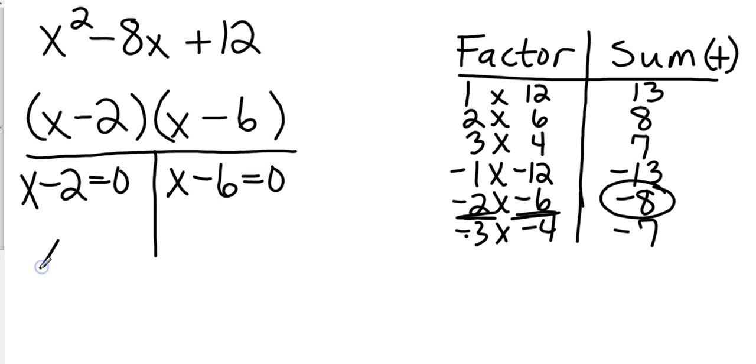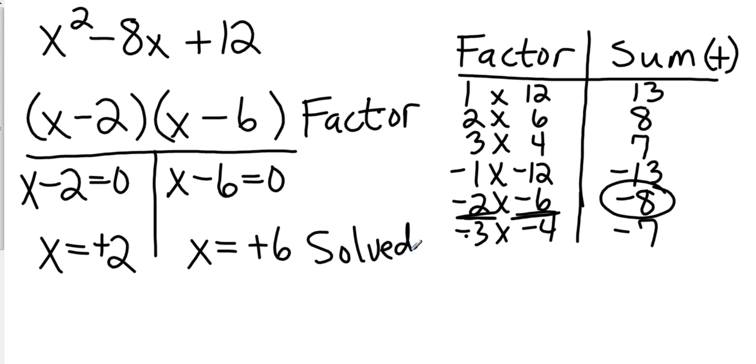So, and I end up with negative 2 and, excuse me, positive 2 and positive 6. You don't have to put the positives there. I just did that because I messed up that negative over there. So, positive 2 and positive 6. Again, this is factored. And this is solved. Watch the directions. Make sure you know what they want.